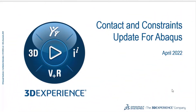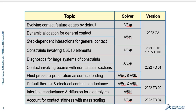This is a contact and constraints update for Abacus. My name is Harry Harkness. I manage the contact and constraints development team for Somalia. This is the list of topics that we're going to be covering. These have been released in various versions of Abacus 2022, as shown in the right-most column. We'll be talking about enhancements for both Abacus Explicit and Abacus Standard.